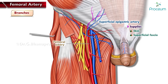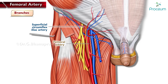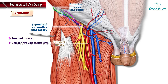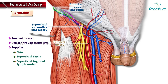The superficial epigastric artery supplies the skin, superficial fascia, and superficial inguinal lymph nodes. The superficial circumflex iliac artery is the smallest branch of the femoral artery. It passes through the fascia laterally and ascends superolaterally towards the anterior superior iliac spine, also supplying the skin, superficial fascia, and superficial inguinal lymph nodes.